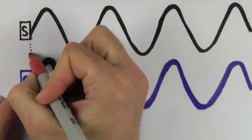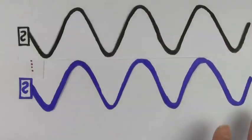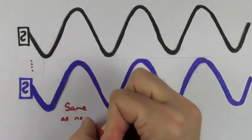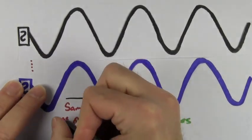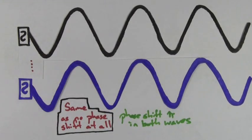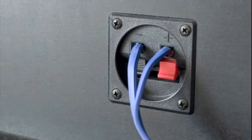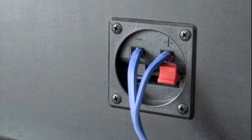You might wonder what happens if we phase shift both speakers by pi. In this case, the two waves line up perfectly again as if nothing happened. Phase shifting both waves is the same as not shifting any waves at all. To create a pi phase shift in a speaker, just reverse the wires on the back of the speaker.